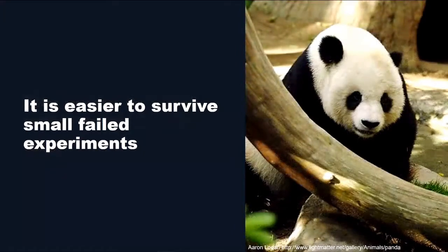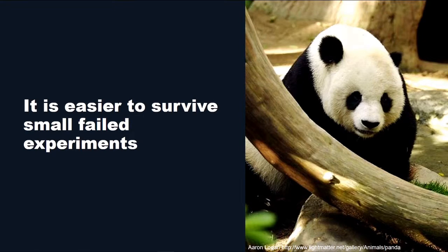The final lesson I want to draw from the natural world is what I call the lesson of the panda. Pandas are terrible at what they do. They're bears — they've got bear paws, bear teeth, and bear guts — and they find themselves in a forest of grass. That's what bamboo is: grass. Their paws are not very good at plucking it, their teeth are not very good at chewing it, their guts are not very good at digesting it. Over time they've done better — they've developed a kind of thumb-y thing made out of wrist bones to help them pluck it.